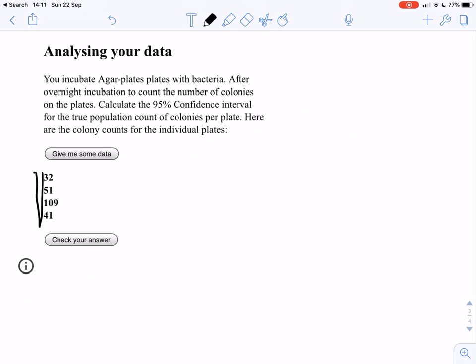So we can calculate our true mean and what we do is we take the count plus minus 1.96 times the square root of the count and we then have to of course divide everything by the number of plates that we have.